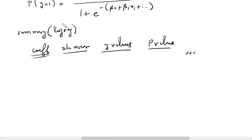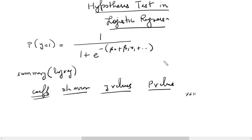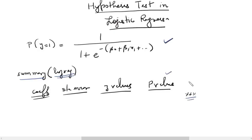Let us look at the hypothesis test which goes on in logistic regression. Quick recap: this is the equation of a logistic regression. We try to find the probability of y equal to 1, given by the logistic response function. When we run the summary function on the logistic regression model — say our model is log_reg — we get the coefficients for every independent variable, the standard error, z-values, p-values, and the stars associated with every independent variable. Both p-value and stars represent how significant a variable is.